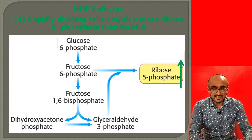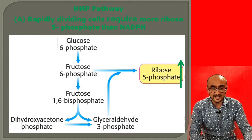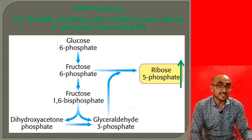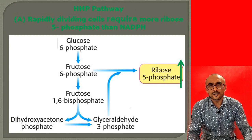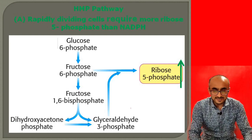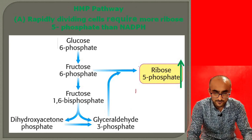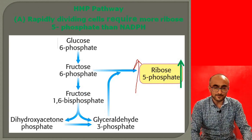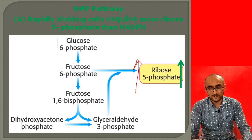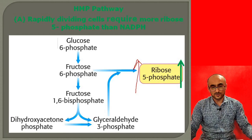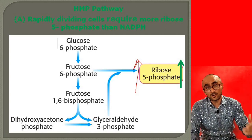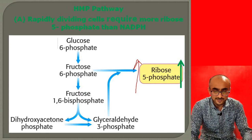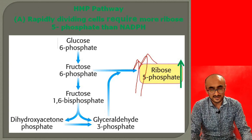In rapidly dividing cells that require more ribose-5-phosphate than NADPH, all reactions of the HMP pathway shift toward production of ribose-5-phosphate in high concentration. Fructose-6-phosphate and glyceraldehyde-3-phosphate, produced in the non-oxidative phase, enter the reactions catalyzed by transaldolase and transketolase so that more ribose-5-phosphate is produced in the cell, fulfilling the cell's demand for nucleotide biosynthesis.